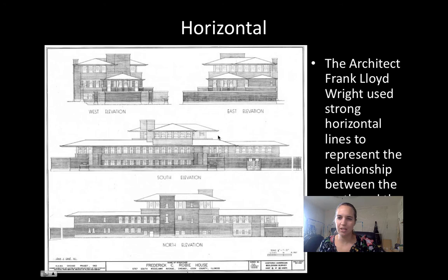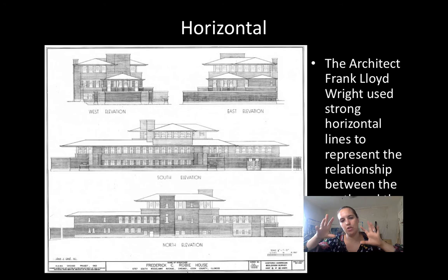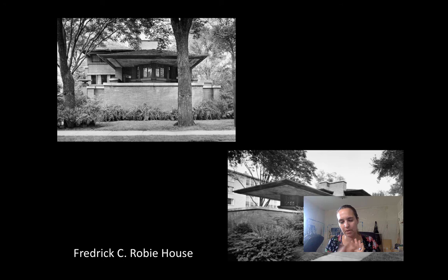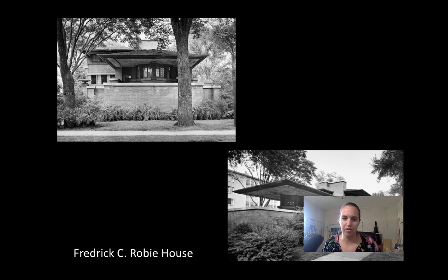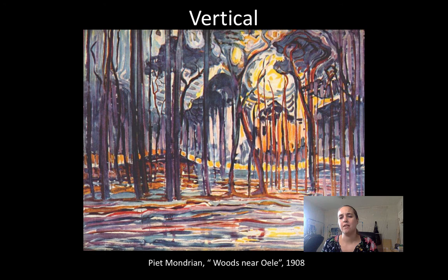In Frank Lloyd Wright's plan for this house, the horizontal movement feels grounded into the earth. The house is built in the Chicago area on flat prairie land, and Wright represents that wide space by emphasizing horizontal lines. Horizontal lines can feel grounded, peaceful, and calm.